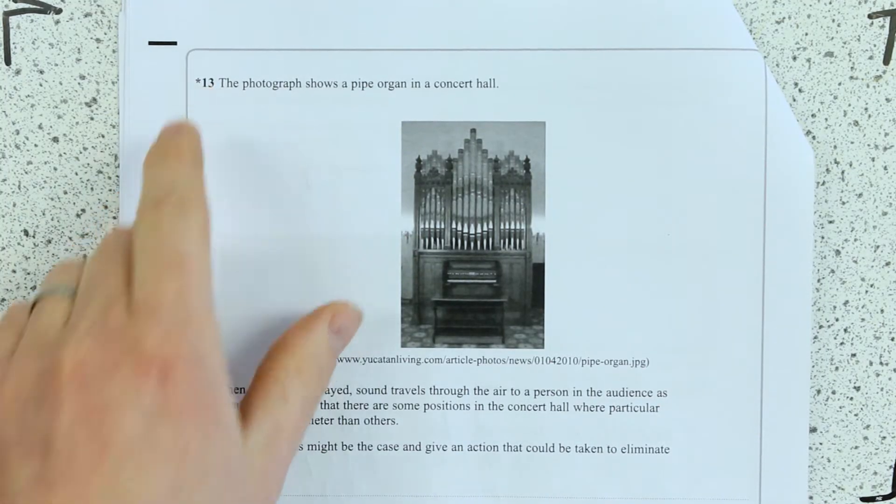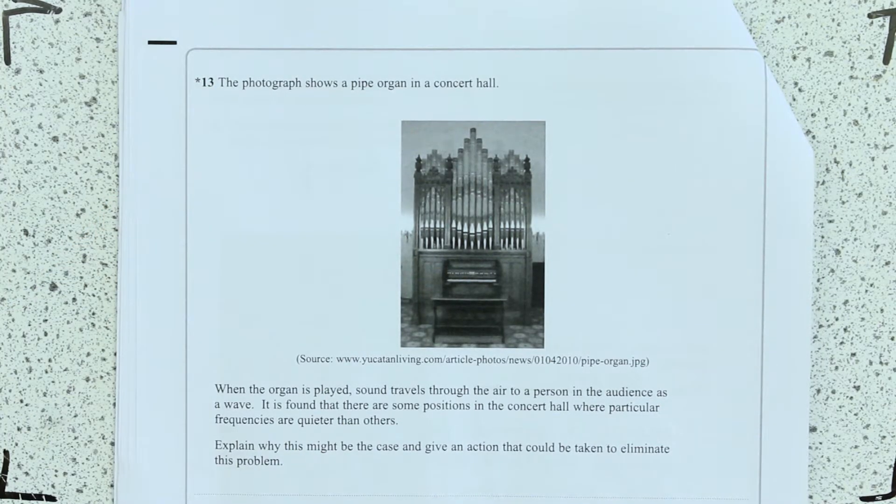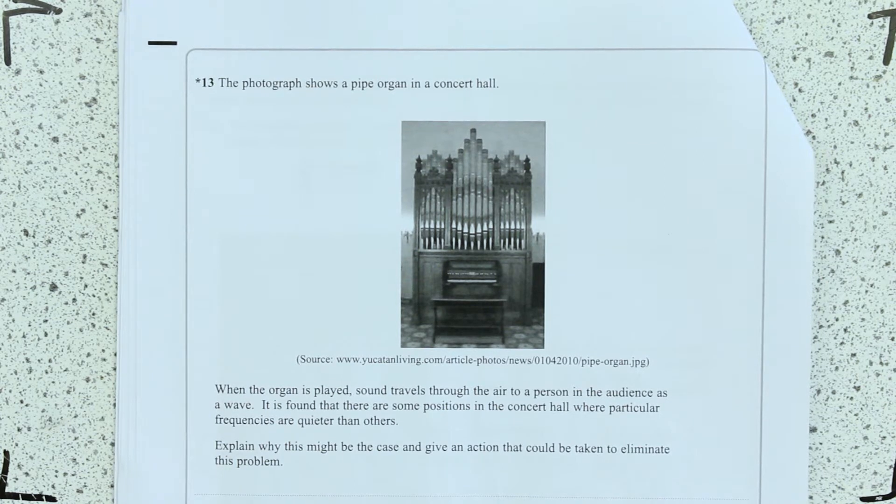Just pause and think about the sequence you're going to go through this answer. So you see question 13's got the asterisk which means it's a quality of written communication in the said Excel spec.